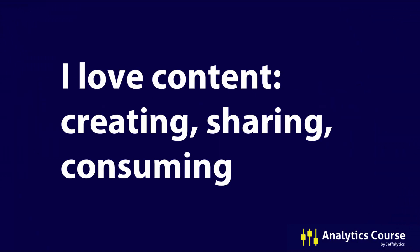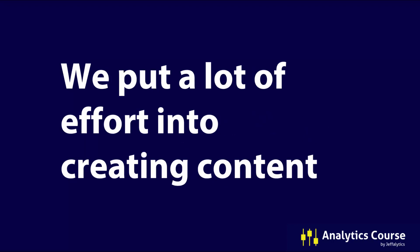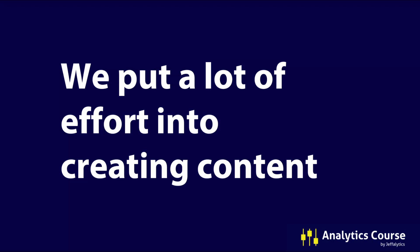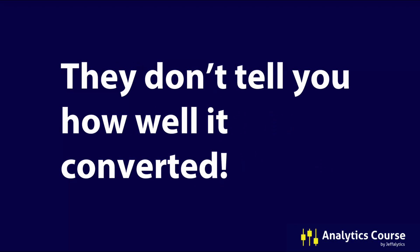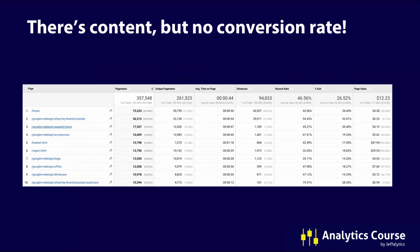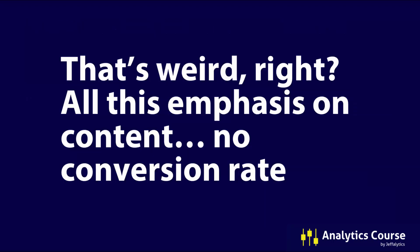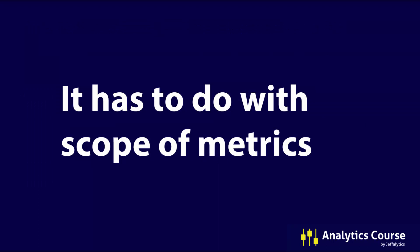I love page value so much in Google Analytics. Content — creating it, sharing it, consuming it — everything about content is awesome. We put a lot of effort into creating content, and it's nice to know how it performs. But when you look at your top content reports, they don't tell you how well it converted. There are pages that were viewed but there's no conversion rate. This is an example from the Google Merchandise Store — you can see bounce rate, entrances, exit rate, page value, but no conversion rate for your content. And that's weird.